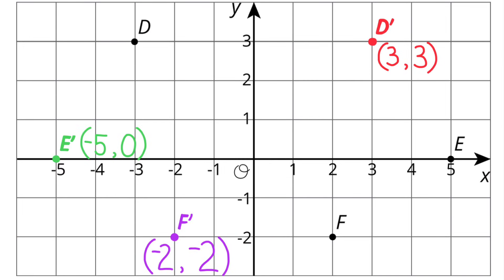Here's the point for D' and its coordinates are 3 and 3. In green, you see the point for E' and its coordinates are negative 5 and 0. And at the bottom, in purple, are the coordinates for the point F'. Its coordinates are negative 2 and negative 2.